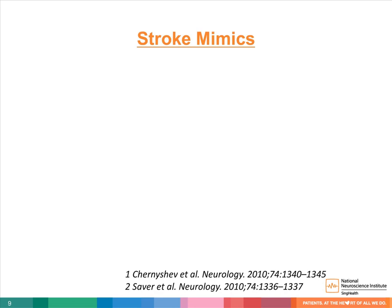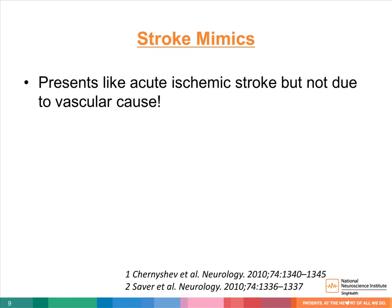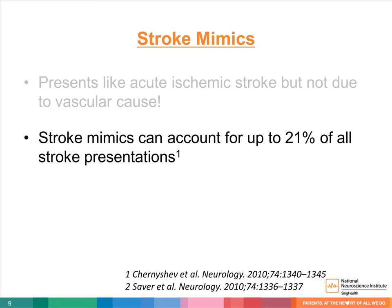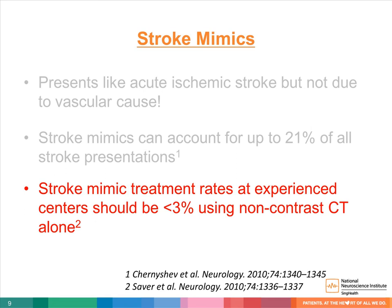Stroke mimics present like a stroke but are not due to vascular causes. With acute stroke, rapid intervention is crucial to maximize early treatment benefits. Hence, correctly identifying stroke and excluding stroke mimics are critical. According to the evidence, stroke mimics can account for up to 21% of all stroke presentations. Even in the best centers, it is inevitable that stroke mimics are sometimes treated with stroke treatments such as thrombolytics. Nevertheless, the acceptable international rate of error in treatment should be below 3%.